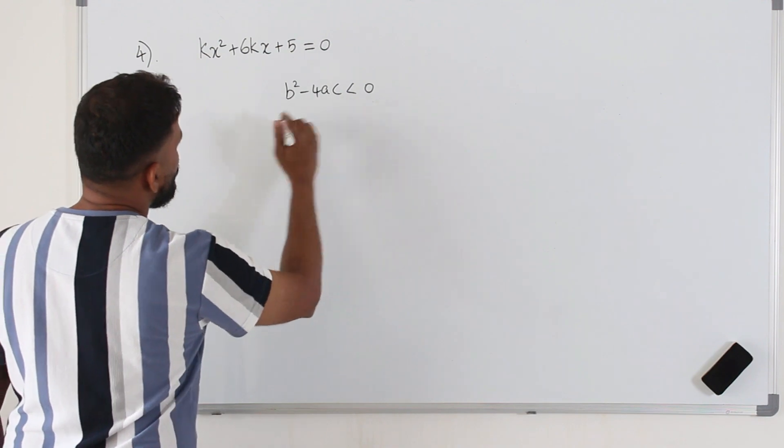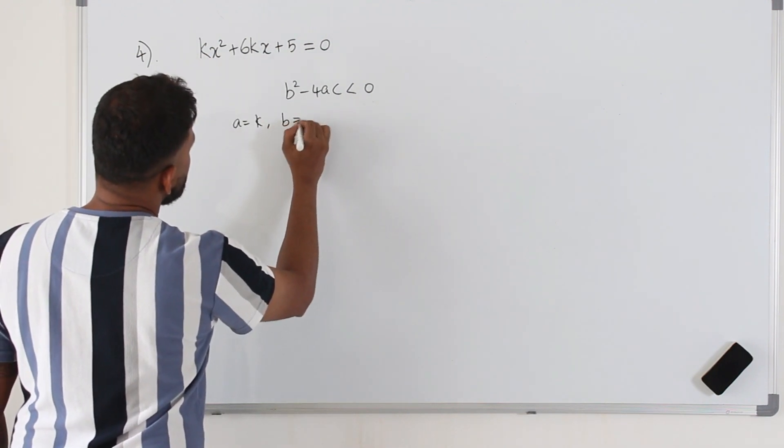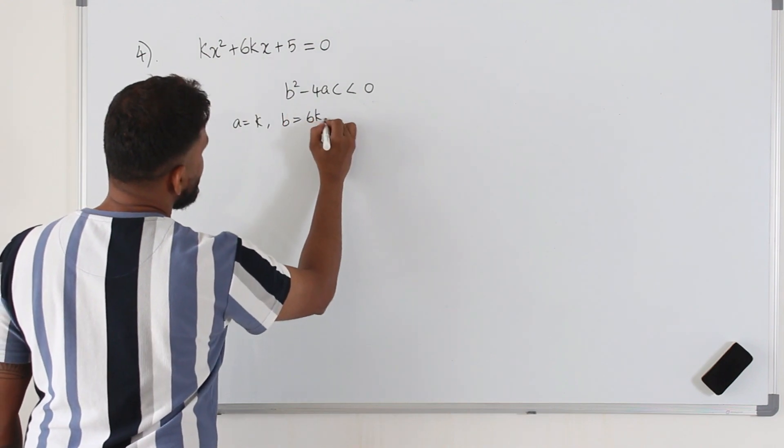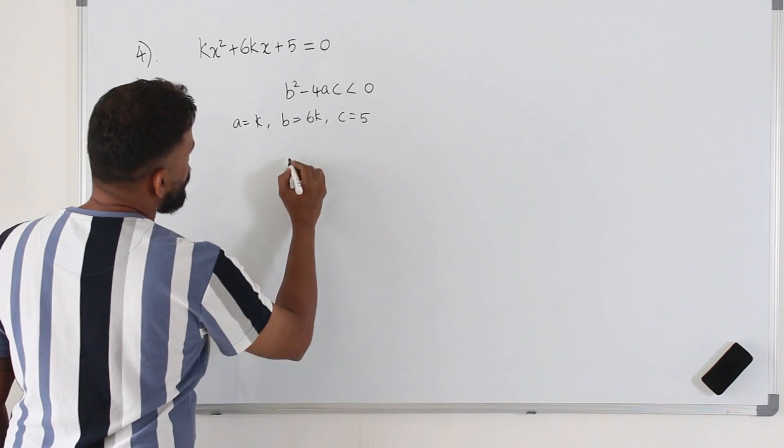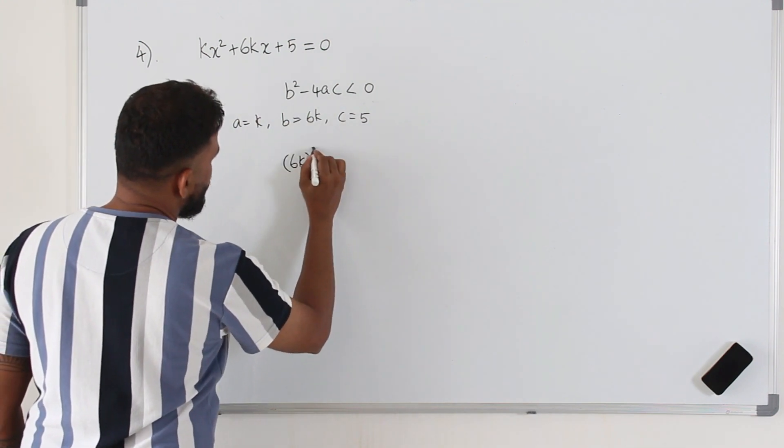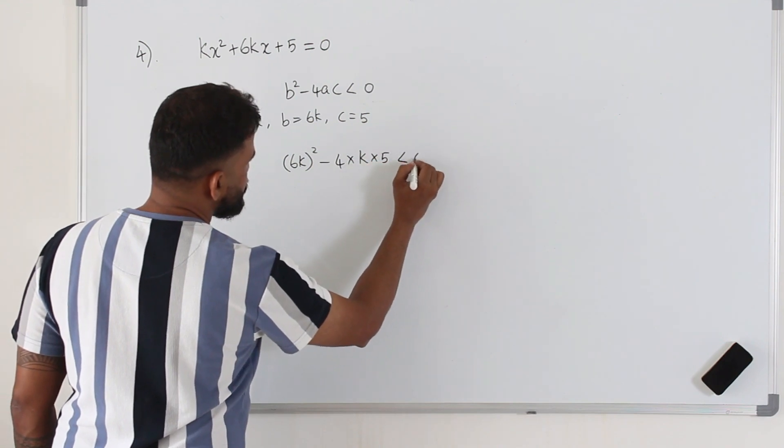Sub in the value of ABC here. A is the coefficient of x square. B is the coefficient of x which is 6k. C is the constant term. Sub in here. B square minus 4ac is less than 0.